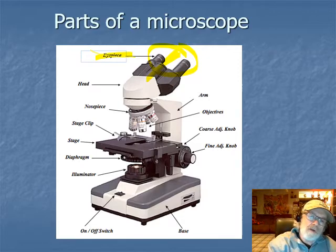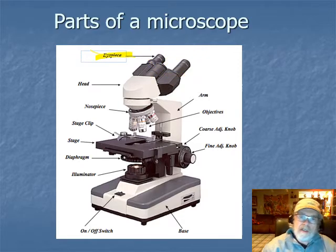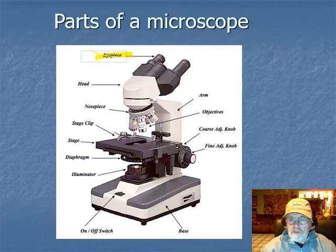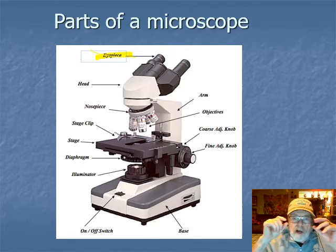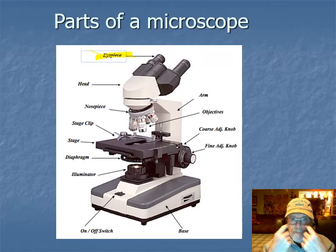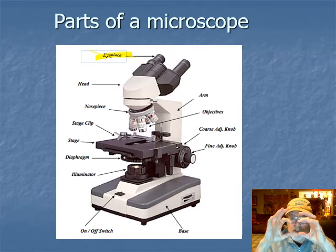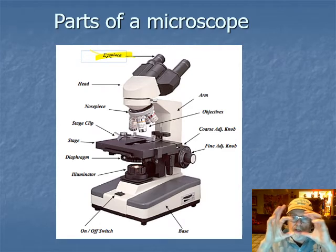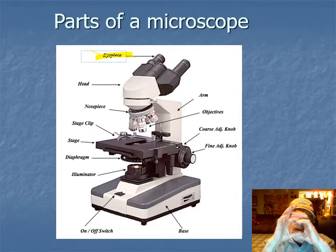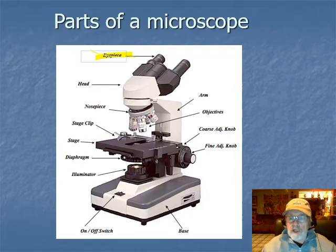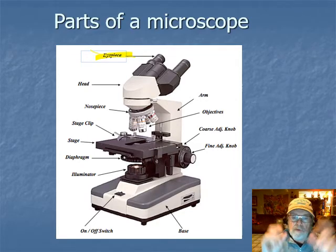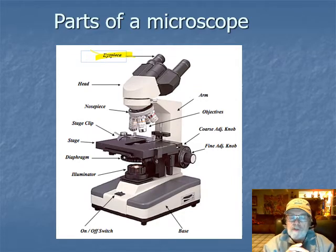The binocular tube is nice simply because you're able to take the eyepieces and move them out or move them close. When you look through the eyepieces you want to see a single round field of vision. If you see two overlapping circles, just move those eyepieces a little bit until the two come together and you have one single circular area of illumination that you're looking at.